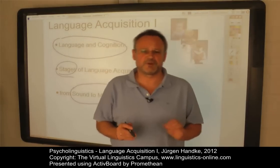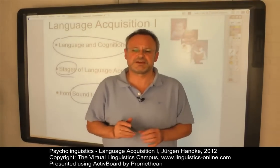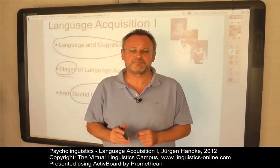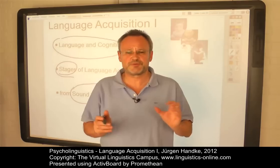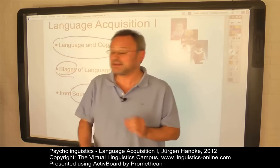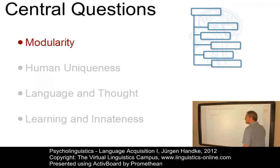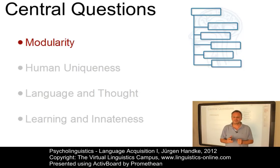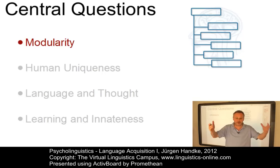First language development has generated much interest in linguistics, psychology and various other disciplines, particularly because it provides concrete answers to various fundamental research questions related to language and cognition. For example, one question concerns the aspect of modularity. Do children acquire language by means of a specialized cognitive device that is part of their genetic endowment? Or does language emerge from our general cognitive abilities learned through trial and error skills, such as doing addition or riding a bike?